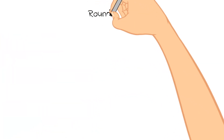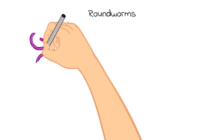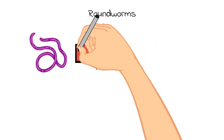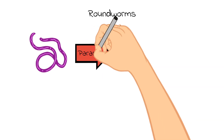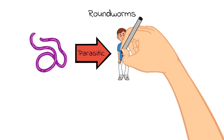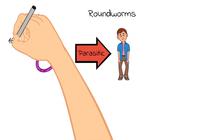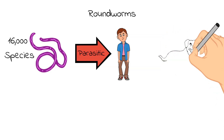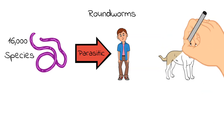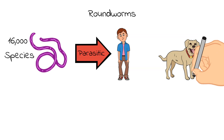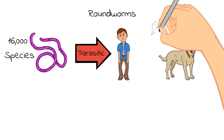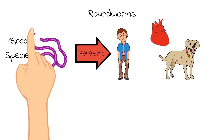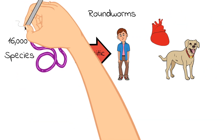Next, let's talk about roundworms. Roundworms can live on their own, but they are most known as parasites as well, which means that they live off of other animals. Roundworms are typically found in the guts of other animals. There are over 16,000 parasitic species of roundworms. One example of roundworms are heartworms — these don't live in the gut, but they can cause a serious disease in dogs because they live in the heart and the blood vessels.